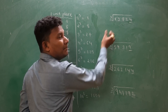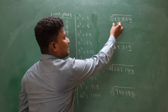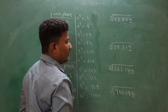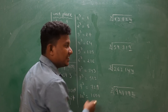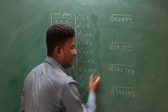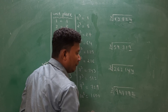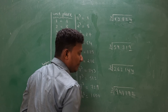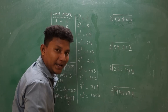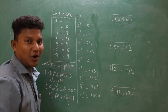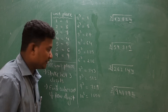For the first example the remaining digit is 30. For the second example the remaining digit is 59. For the third, 262. For the fourth example it is 941. Now see the tricks on how to find the answer.